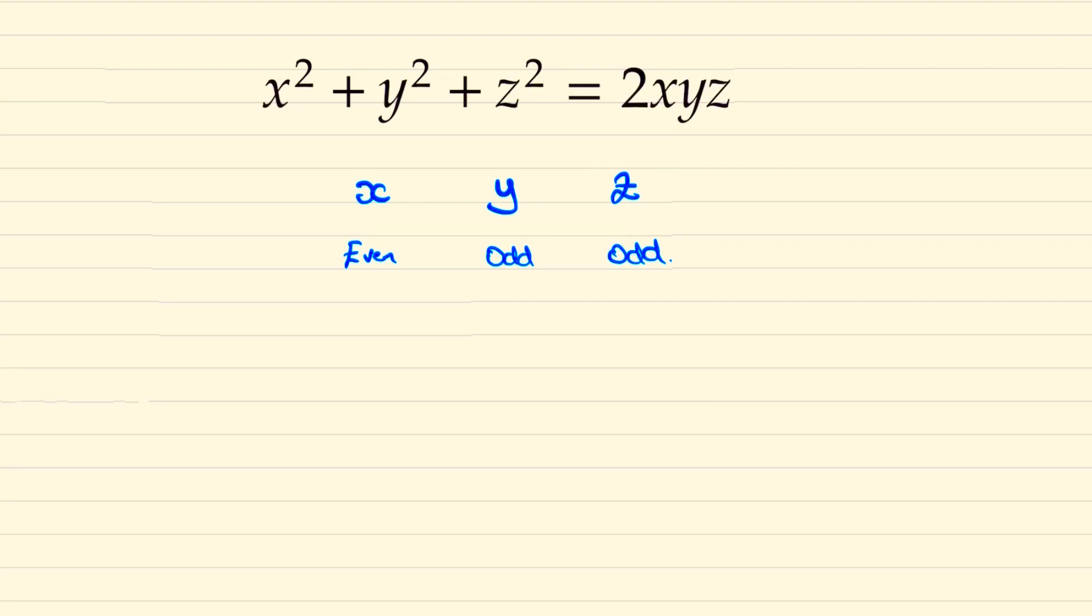Now to answer this question we're going to use something called modular arithmetic. For those who aren't aware, modular arithmetic is dividing by a number and then looking at its remainder. So in this case we can divide x squared, y squared and z squared by 4 and consider what the remainder will be.